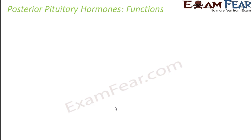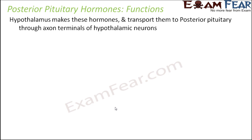Now let us look at the posterior pituitary hormones. The posterior pituitary is nothing but a part of the hypothalamus. So the hormones secreted by it are actually synthesized by the hypothalamus and transported to the posterior pituitary through the axon terminals of hypothalamic neurons. There are two such hormones: oxytocin and vasopressin.